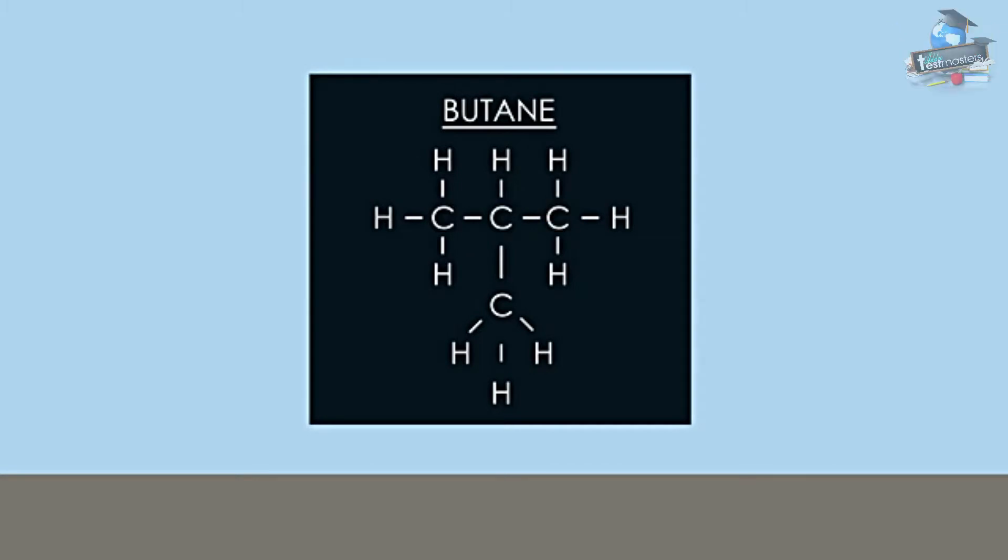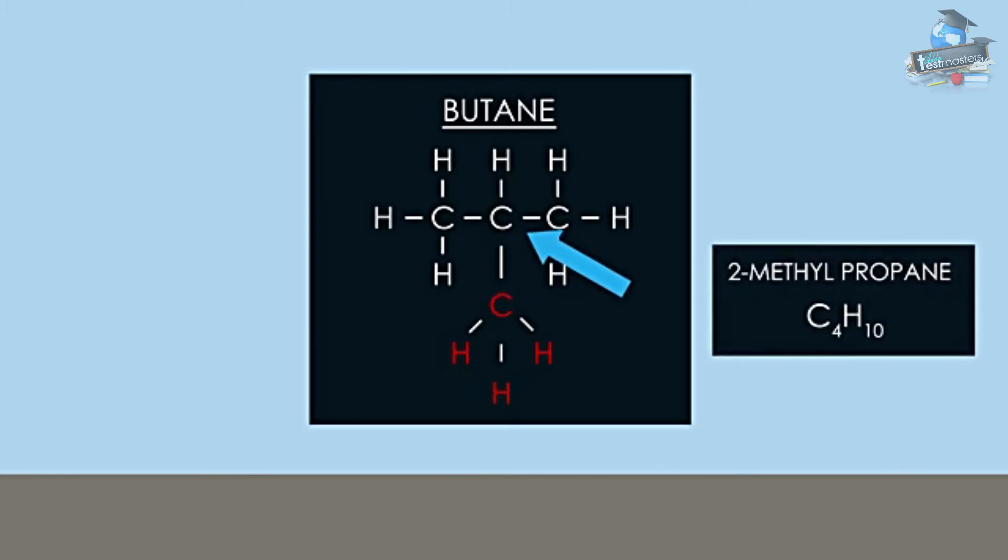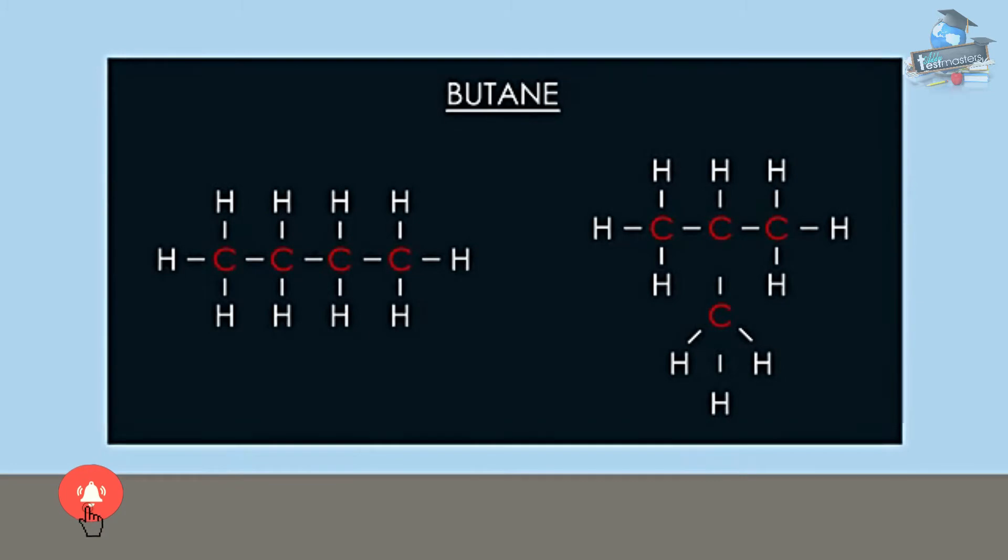With a methyl group sticking to the second or middle carbon atom, its name becomes 2-methyl propane. Do not be confused—it is still an isomer of butane because of the four carbon atoms.